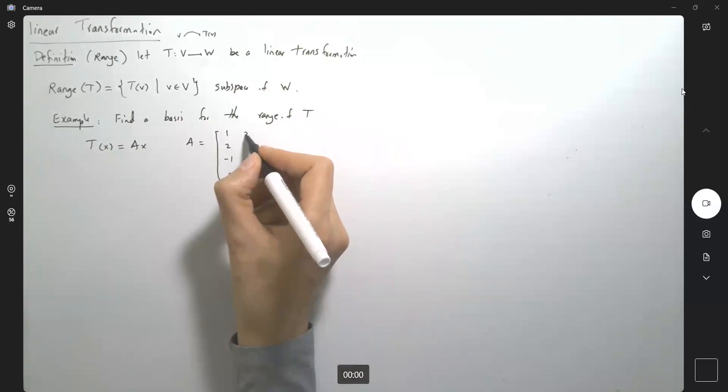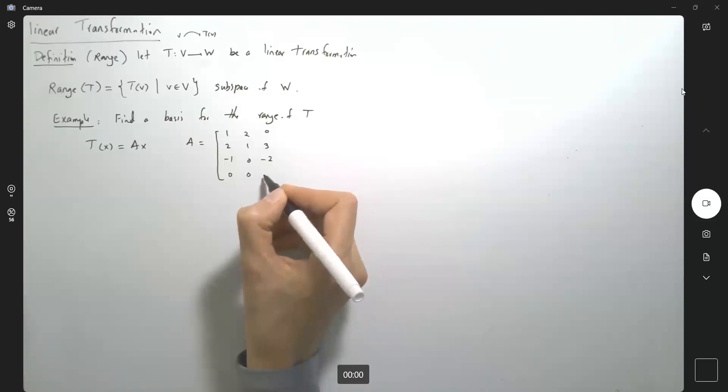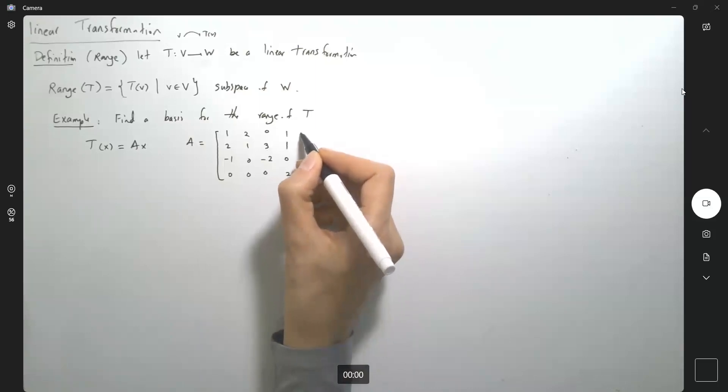Then you have 2, 1, 0, 0, 0, 3, negative 2, and 0, 1, 1, 0, and 2, negative 1, 0, 1, and 8.